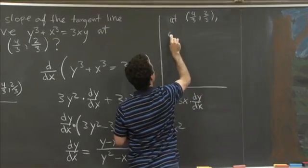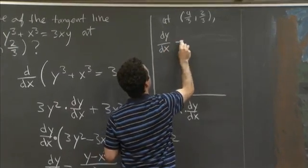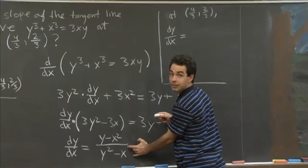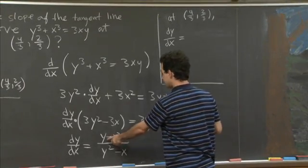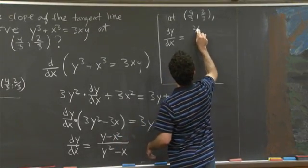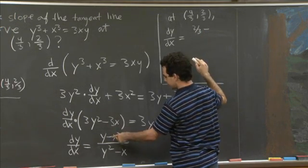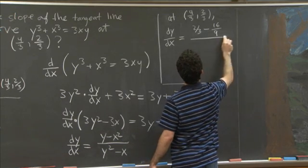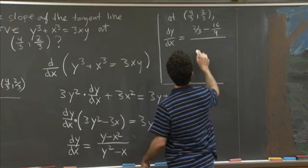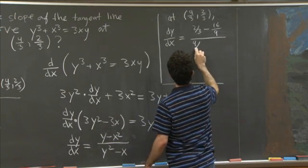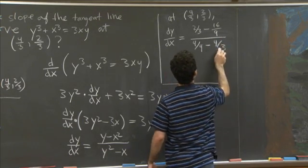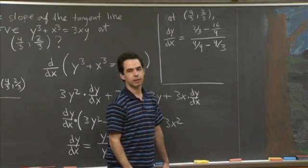So at the point 4 thirds comma 2 thirds, we have dy by dx. So OK, so we just plug that value of y and that value of x into this formula that we've got. So that's 2 thirds minus 4 thirds squared is 16 ninths over 2 thirds squared is 4 ninths minus 4 thirds.